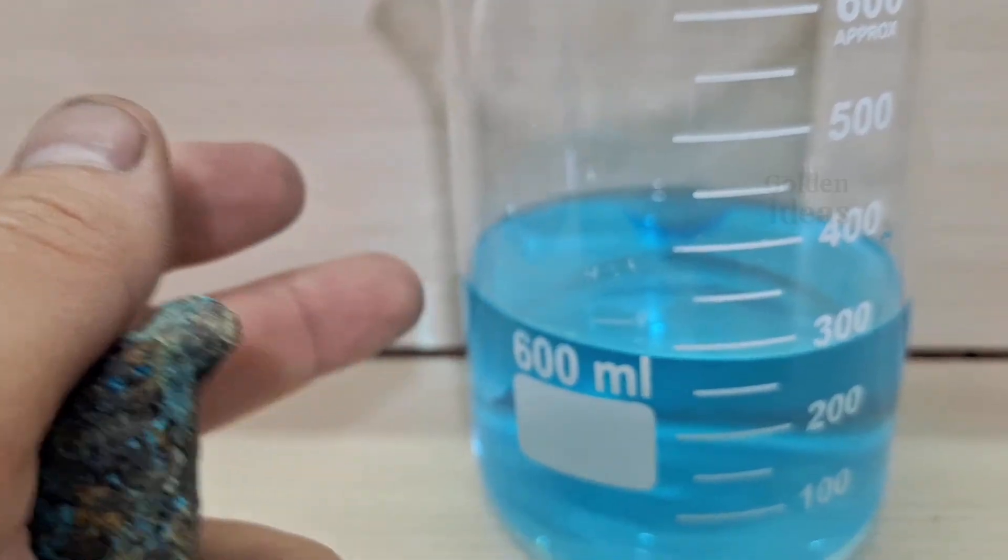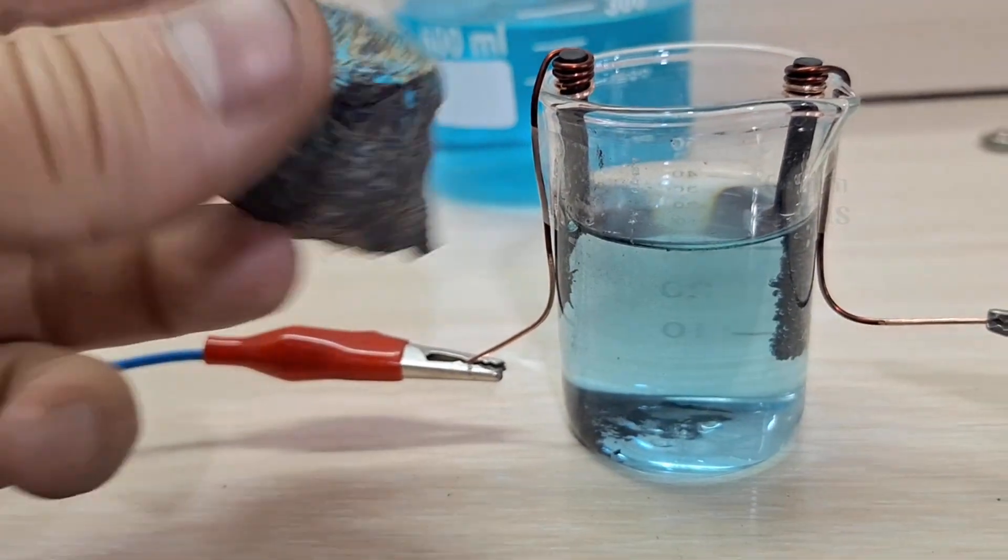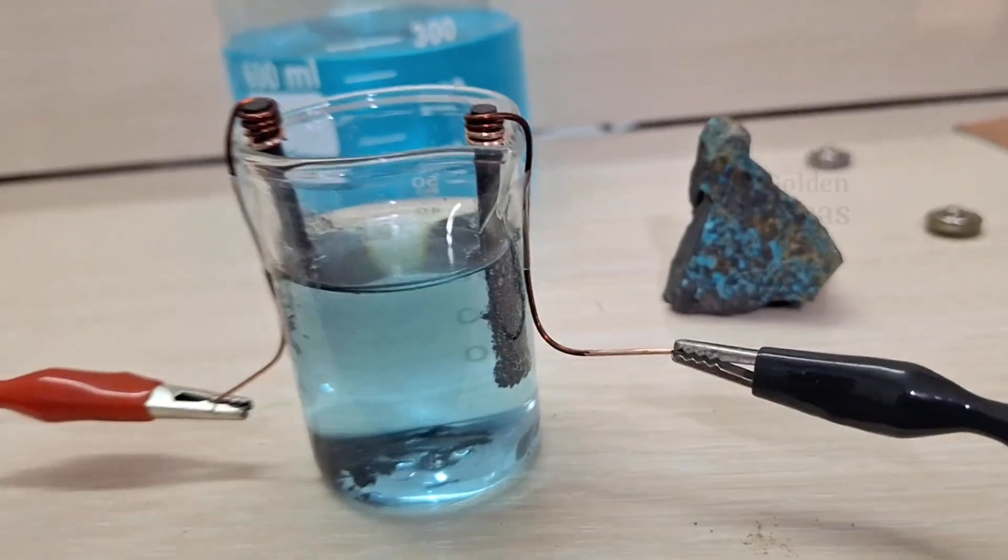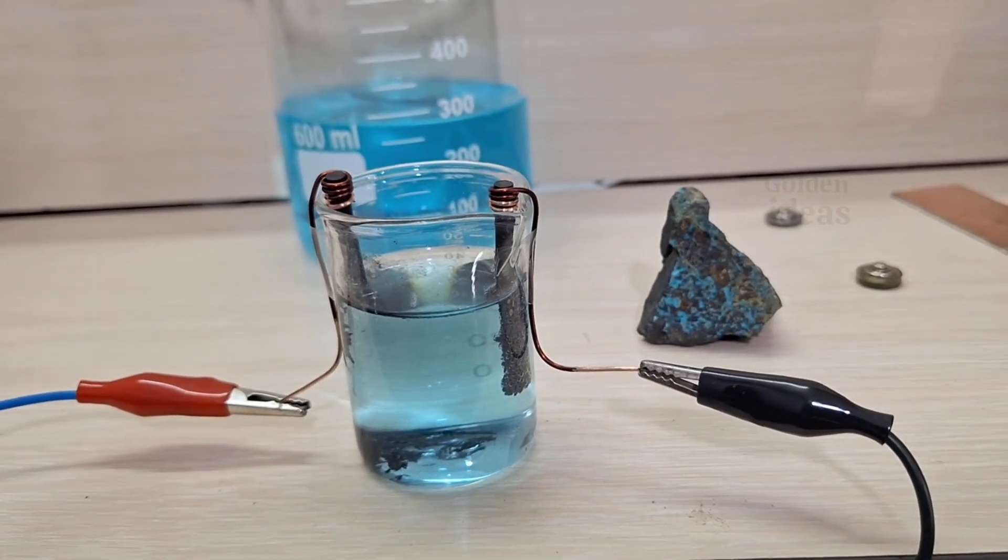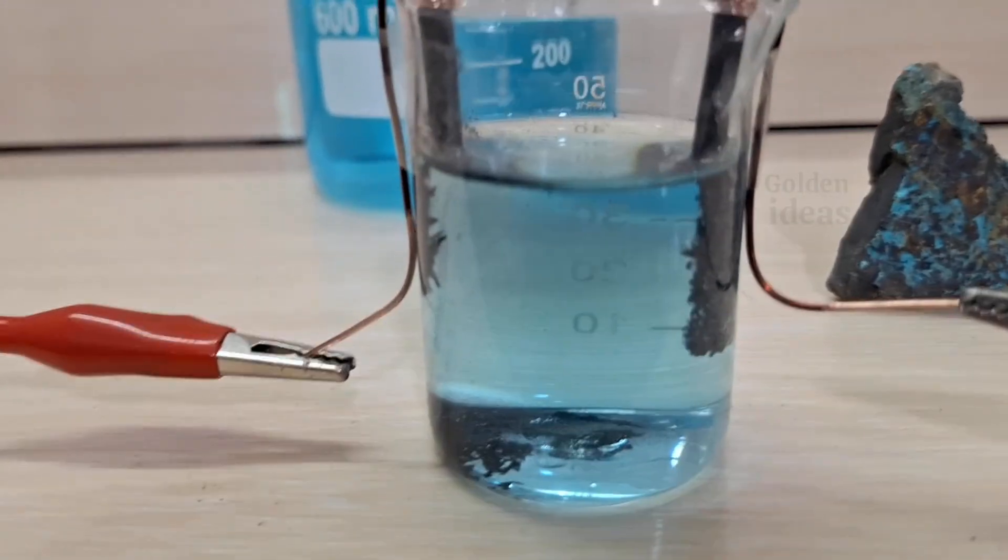Please note, in this experiment, I'm not just focusing on gold precipitation. I want to observe how all three elements, gold, silver, and copper, behave during the process. And I'm especially interested to see what happens when both electrodes are made of the same material.